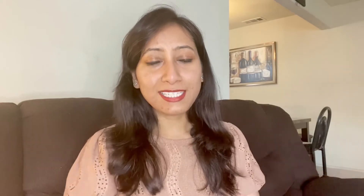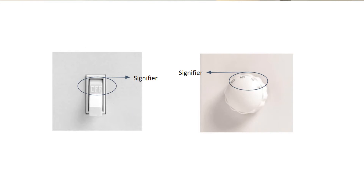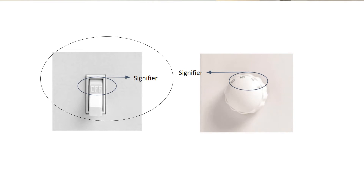As the name suggests, signifiers are indicators that communicate what affordances objects have. These indicators may be a mark or just a simple text label. Going back to our fan ceiling switch example: on the right side there are little marks on the button that help you understand you need to rotate it left or right to turn it off or on. On the left side there is a text label that helps you understand you need to push the button.